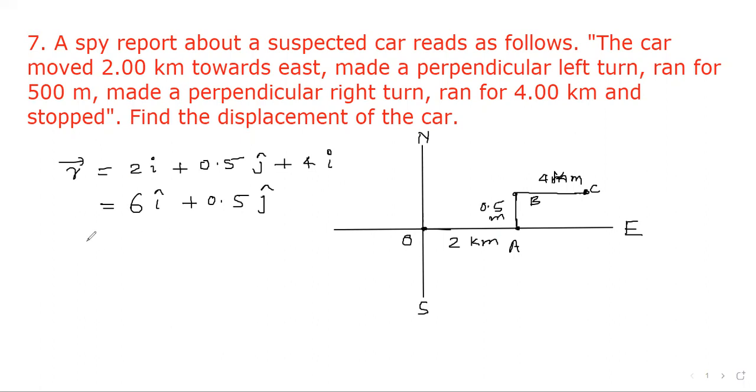Now we have to find out the modulus value. So vector r modulus will be root of 6 square plus 0.5 square. So this will be equal to 6.02 kilometers.